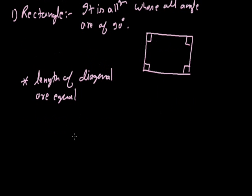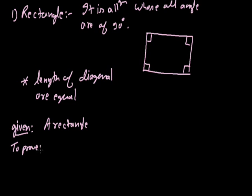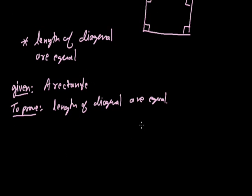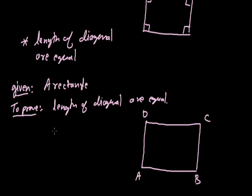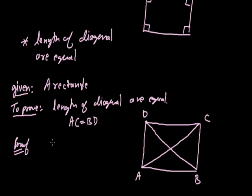Rectangle mein diagonals ki length equal hoti hai. Let's prove this. What is given? A rectangle ABCD is given. What we have to prove? That the length of the diagonals are equal, that is AC equals to BD. Let's see the proof — we consider triangle DAB and triangle CBA.